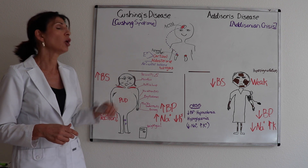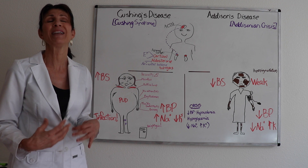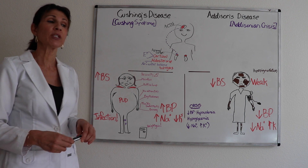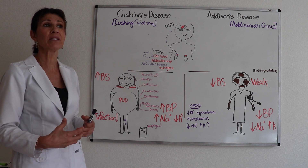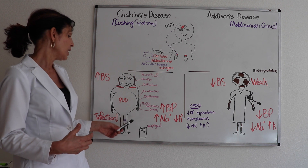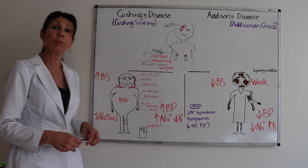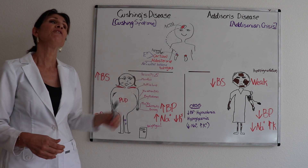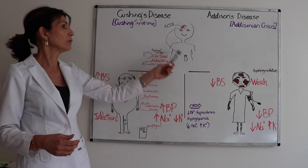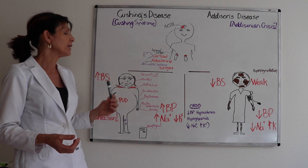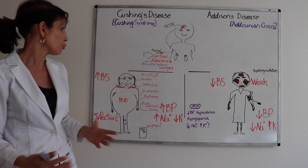Weight gain is also cardinal, as cortisol stimulates appetite — prescribers sometimes give dexamethasone to cachectic or cancer patients to stimulate eating. Cortisol also causes collagen depletion, leading to skin tearing and bruising, and demineralizes bones, causing osteoporosis. Additionally, in females, the excess androgens — the third hormone set from the adrenal cortex — cause secondary male sex characteristics such as a receding hairline and facial hair.